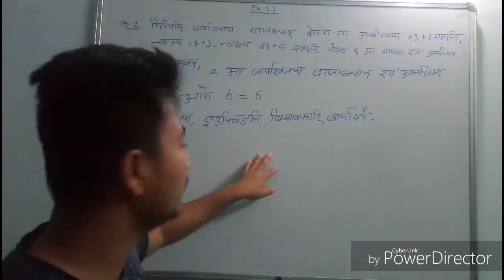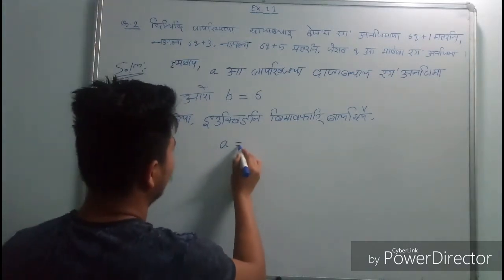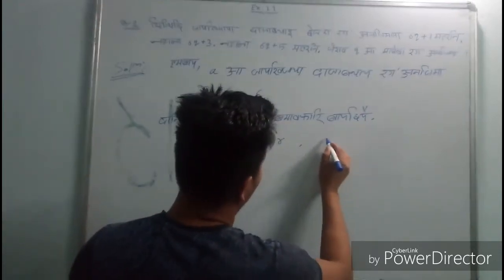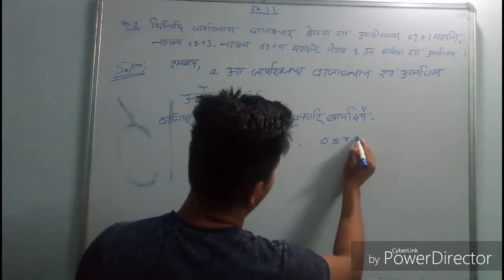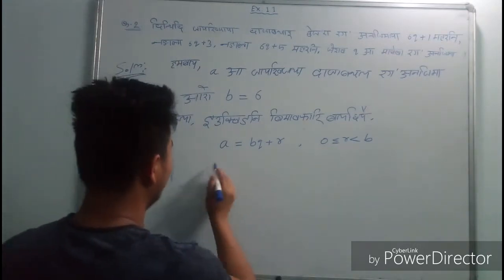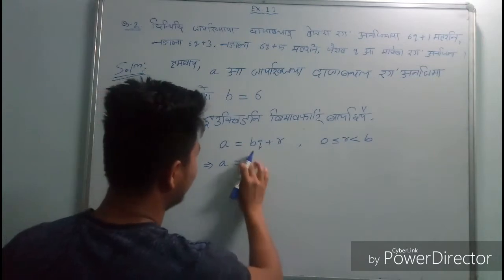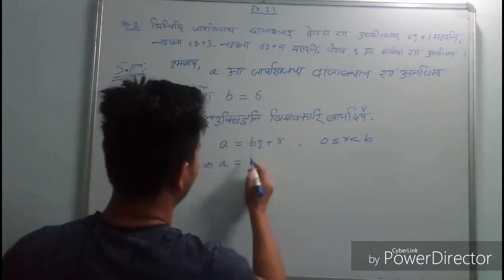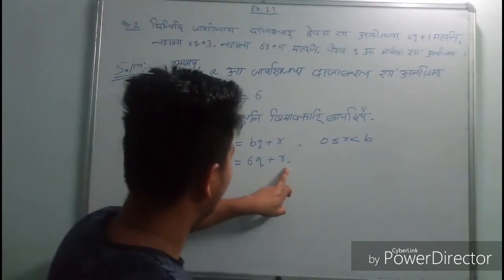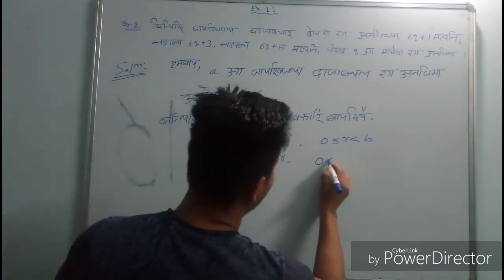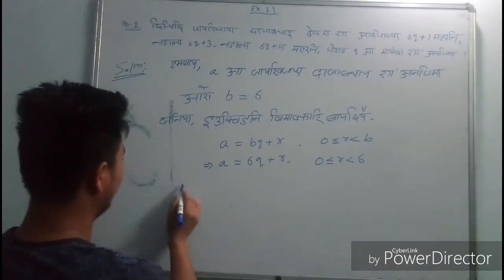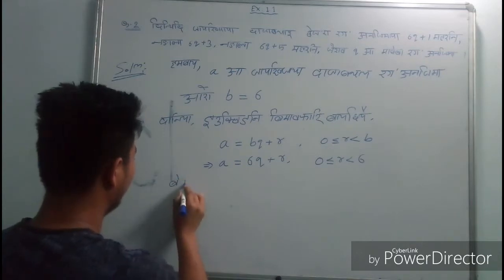If you want to see this one, you can see A is equal to bq plus r. 0 is less than or equal to r, and r is less than b. So if you want to see this, b will be equal to 6.